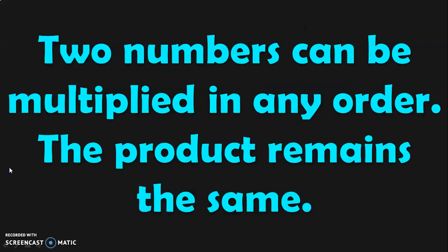The first property is that two numbers can be multiplied in any order and the product remains the same. The answer that you get by multiplying two or three numbers is called a product in multiplication. The rule says that two numbers can be multiplied in any order and their product will remain the same. Let us understand this with the help of examples.